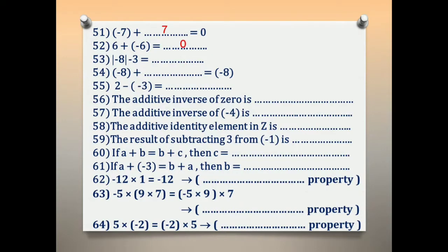Number 53: absolute of negative 8, minus 3. First, solve the absolute. The absolute of negative 8 is 8. Then 8 minus 3 equals 5.